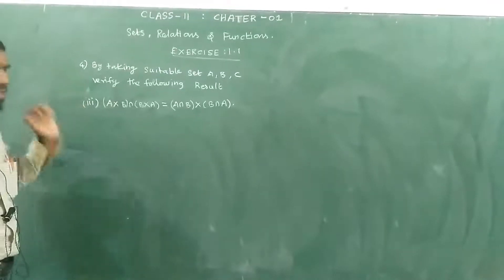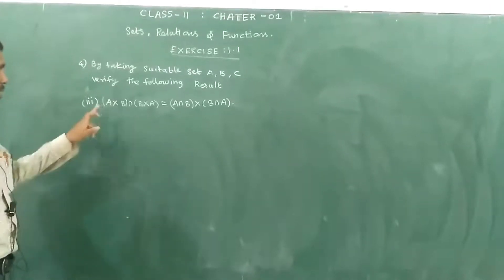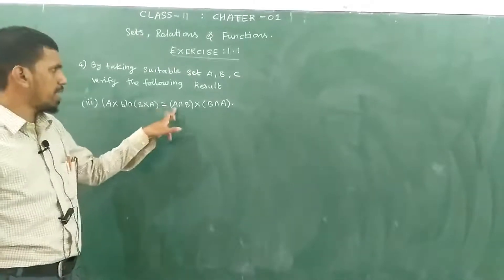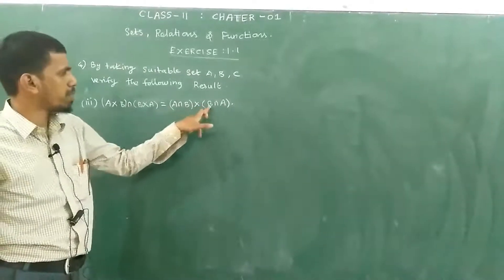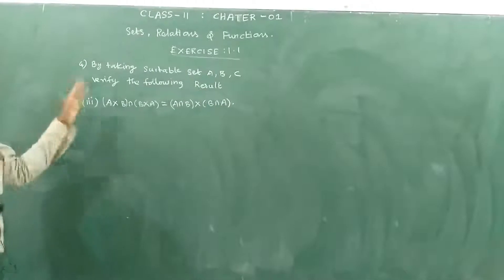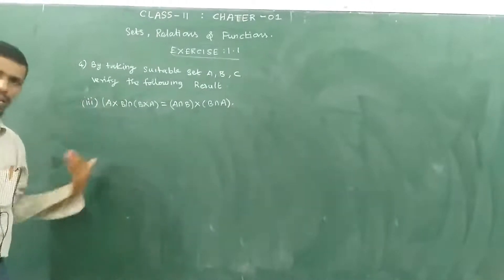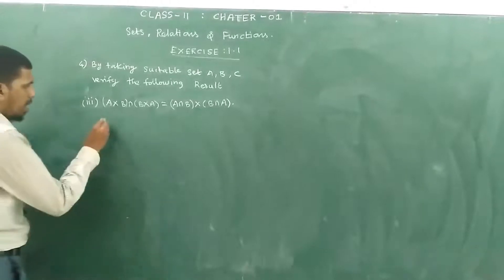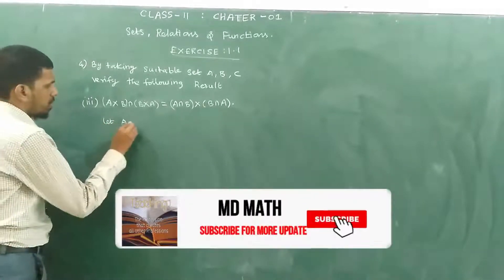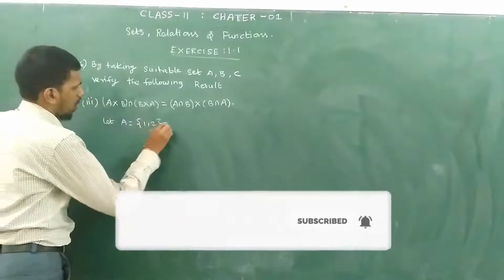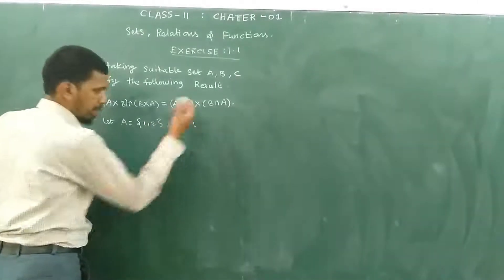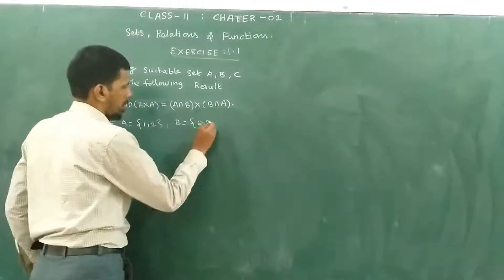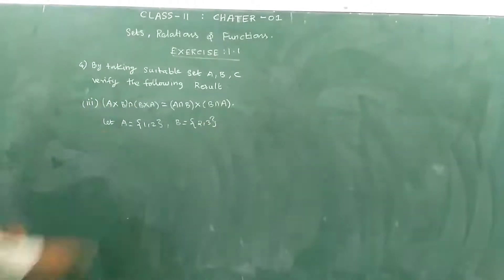Question 4, Sublation 3. A cross B intersection B cross A equals A intersection B cross B intersection A. We have two sets, A and B. Let A equal to {1,2} and B equal to {2,3}. We have the left hand side.